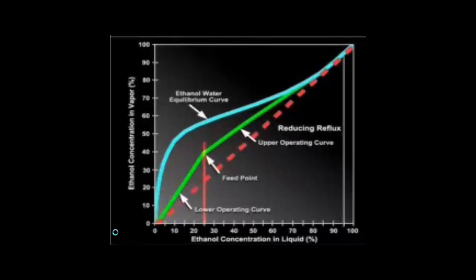If we decrease the reflux, we remove more of the overhead stream as the distillate product and return less liquid to the column. The throughput of the column increases. However, reducing the reflux causes the operating lines to move towards the equilibrium line. The result is more stages are required to achieve the separation. More stages results in a taller column, which increases the capital cost. From this, we can see that setting the reflux is an economic trade-off between throughput and capital costs.